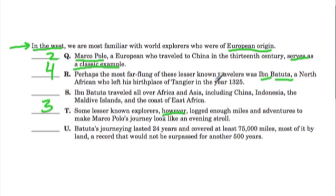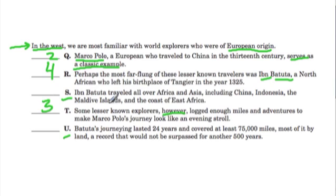These last two sentences build off that description. S comes next, telling us where this person traveled: Ibn Battuta traveled all over Africa and Asia, including China, Indonesia, the Maldive Islands, and the coast of East Africa.